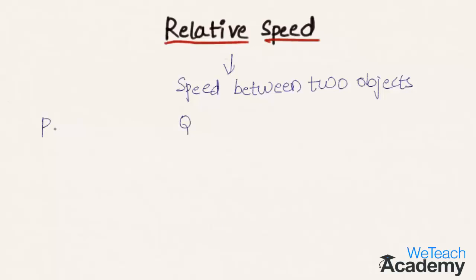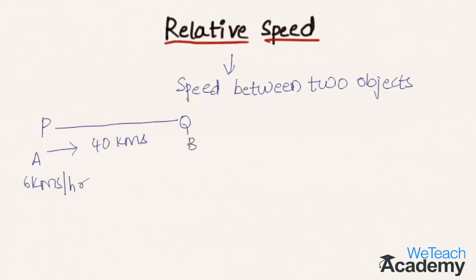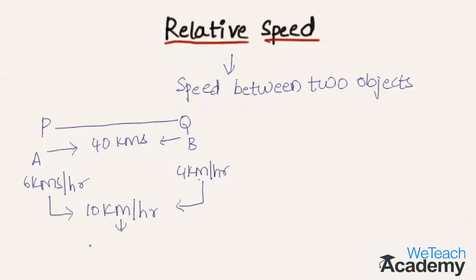Let us say P and Q are two different places and the distance between them is 40 kilometers. A starts from P towards Q at a speed of 6 kilometers per hour, and B starts from Q towards P at a speed of 4 kilometers per hour. Together A and B cover 10 kilometers per hour — this is the relative speed.